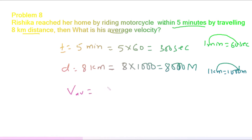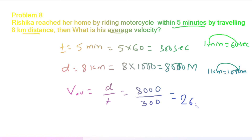Now, average velocity equals total distance divided by total time: 8000 divided by 300, which gives 26.66. The unit of velocity is meters per second, so the average velocity is 26.66 meters per second.